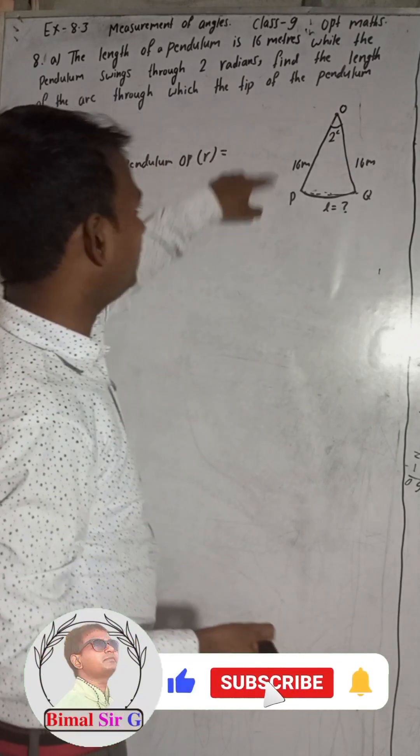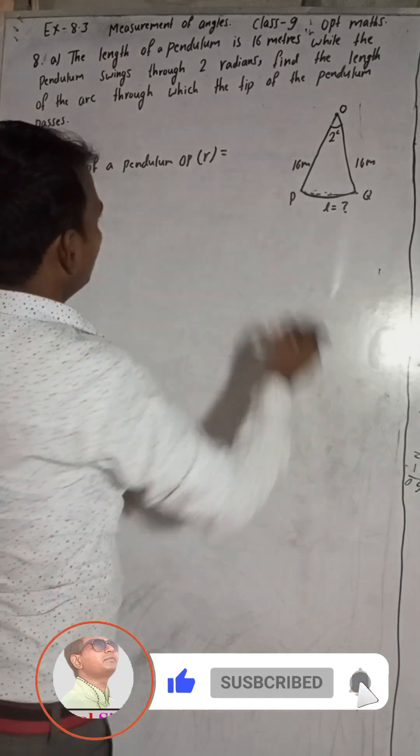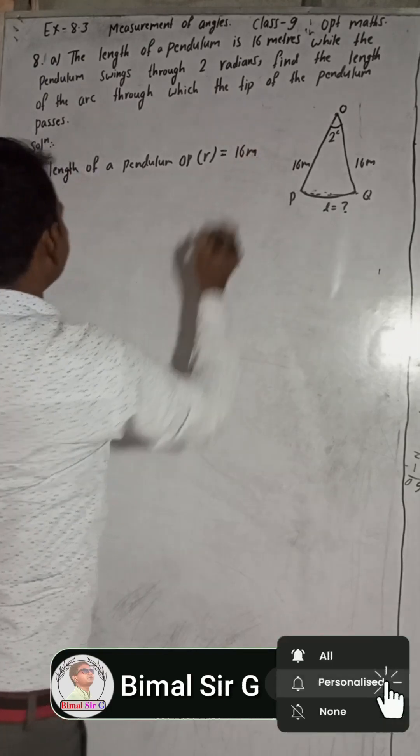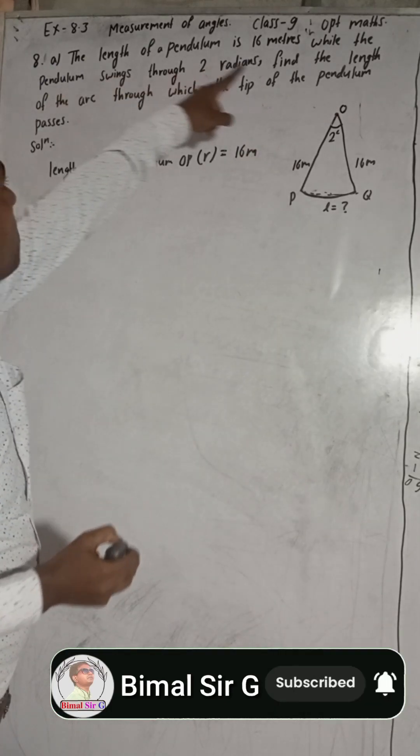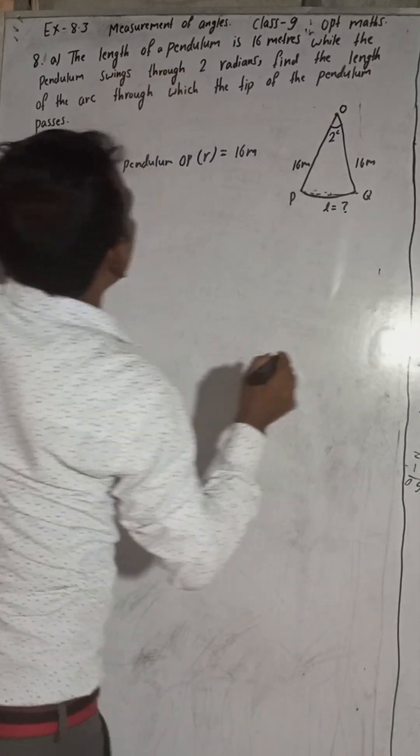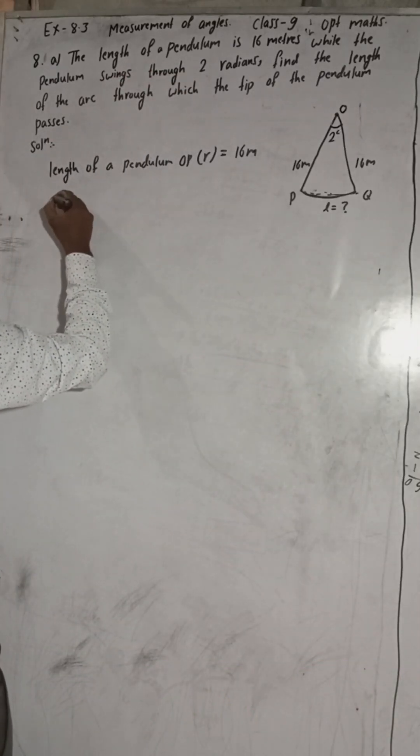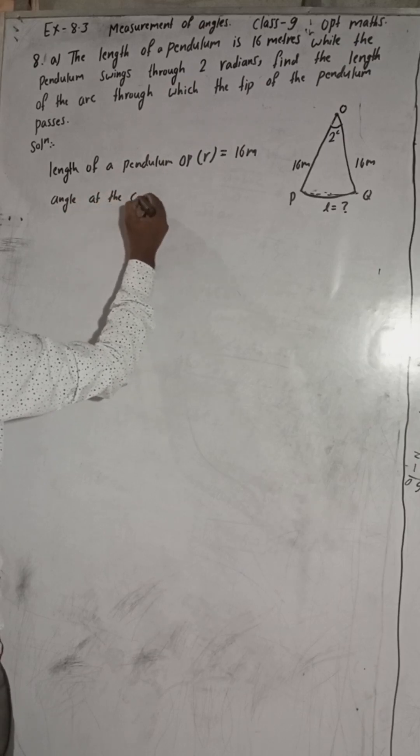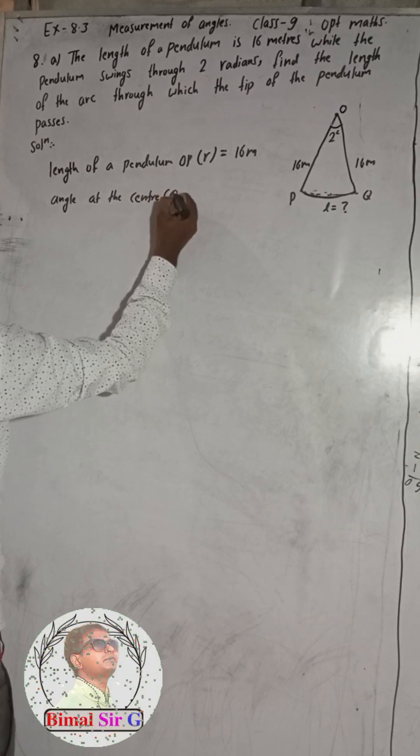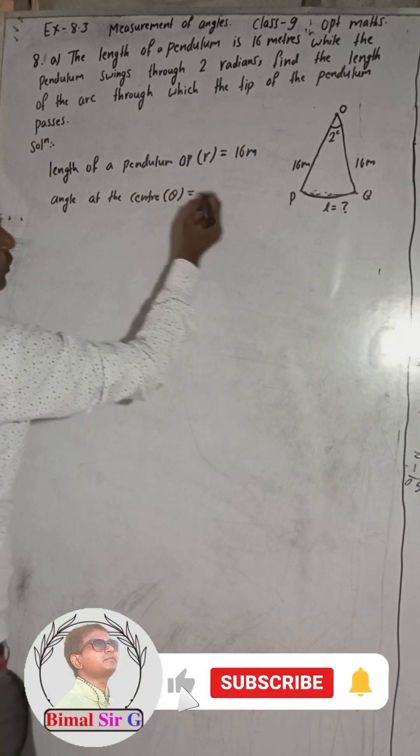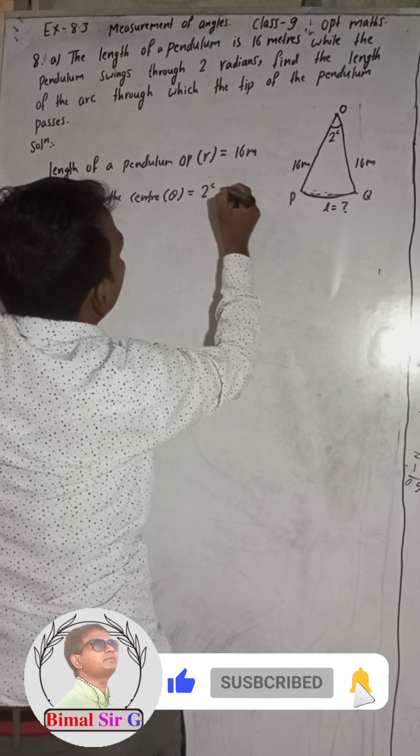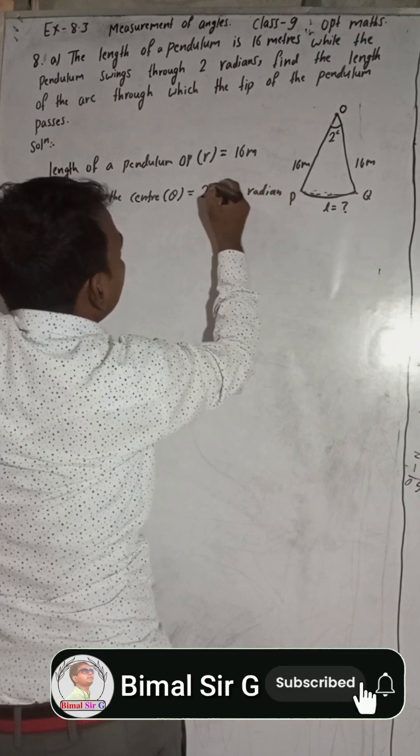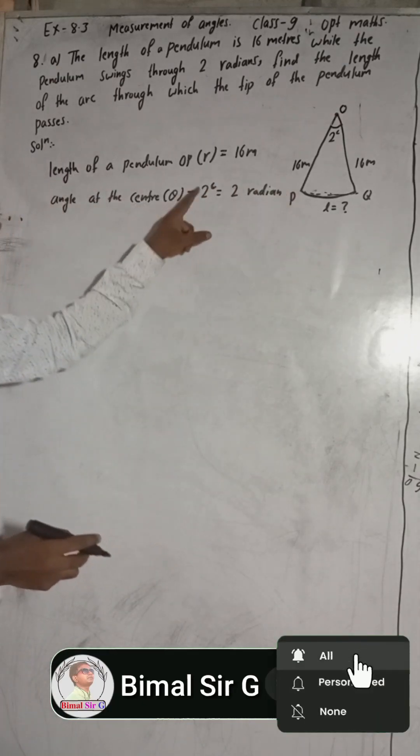So R is equal to 16 meters given. While the pendulum swings through two radians, that means angle at the center. Angle at the center, that means angle at the center. This will be denoted by theta. So angle at the center is 2 radians, that means 2 radians or we can write here 2 radians C. This is the notation for radians.